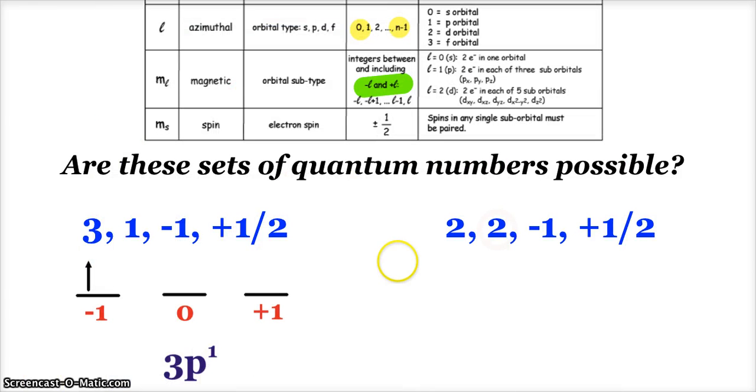Look at this set. I've got 2, 2, negative 1, positive 1 half. The first, N, equals 2. That means it's our second energy level. How many sublevels are on the second energy level? 2, S and P. So the second quantum number can only be either 0 or 1, representing S and P. This is an invalid set of quantum numbers, because the L quantum number cannot be the same as the N quantum number.